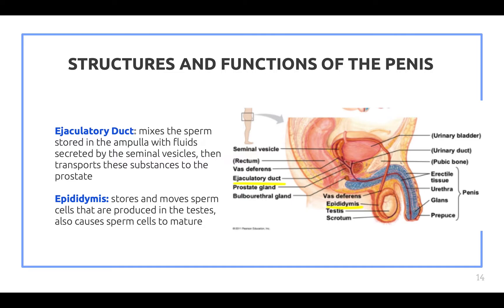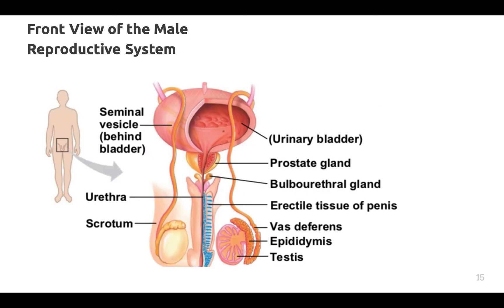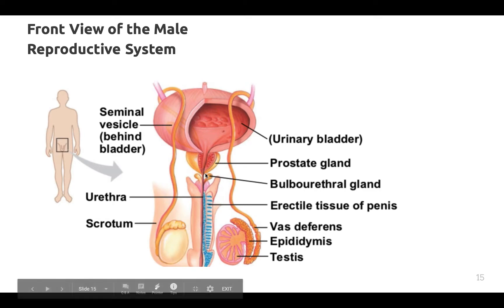The ejaculatory duct mixes sperm stored in the ampulla with fluid secreted by the seminal vesicles, then transports these substances to the prostate. The epididymis stores sperm cells produced in the testes and also causes sperm cells to mature. Here is a front view of the male reproductive system showing the seminal vesicle, urethra, scrotum, urinary bladder, prostate gland, bulbourethral gland, erectile tissue, vas deferens, epididymis, and testes.